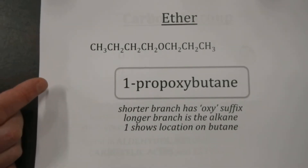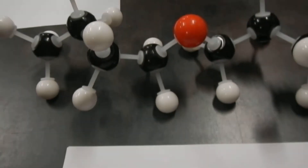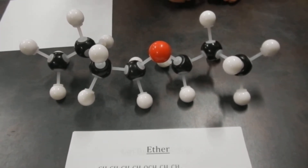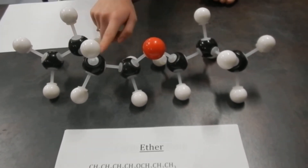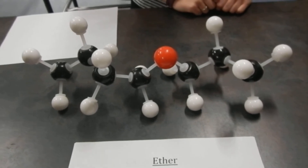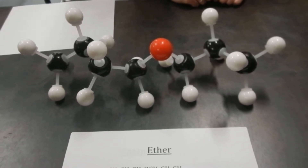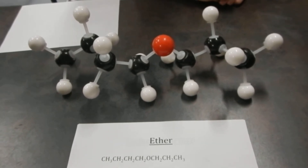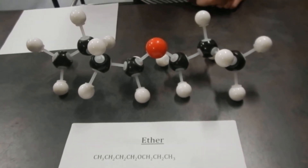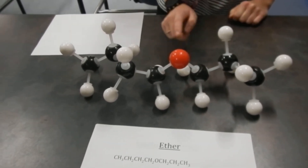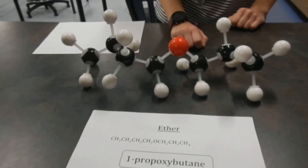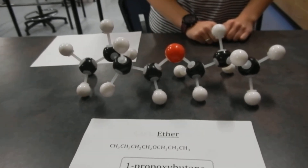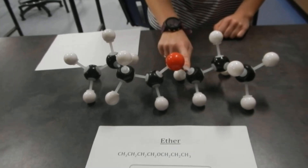If we look at our molecule here, our structure — we've got four carbons on this side, and that's going to be our main chain. It's a longer chain, so that's a butane. On the other side, we have three carbons, and that would be like a propyl branch. But we have a red thing in the middle, and that's oxygen. You should remember, oxygen likes to have two bonds, and it also has a bent structure around it when it's bonded like this.